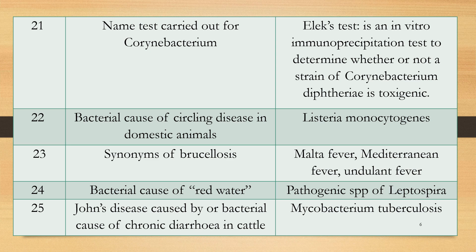If it is a protozoal cause of red water, then it will be Babesia. Question 25: What is the bacterial cause of chronic diarrhea in cattle — shooting diarrhea or diarrhea with emaciation and cachexia? Answer: Mycobacterium avium subspecies paratuberculosis (Johne's disease).